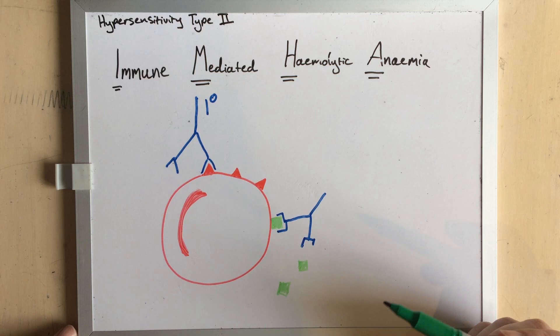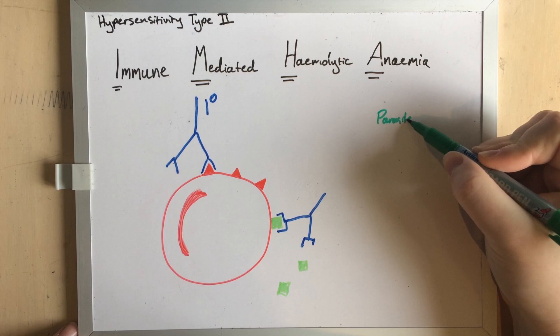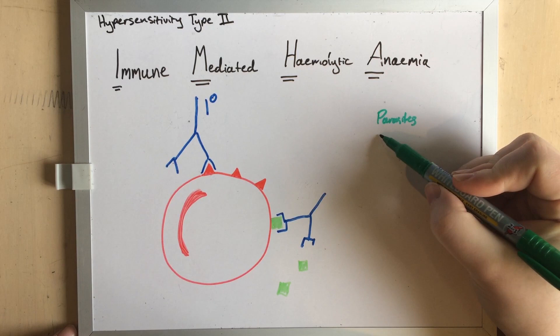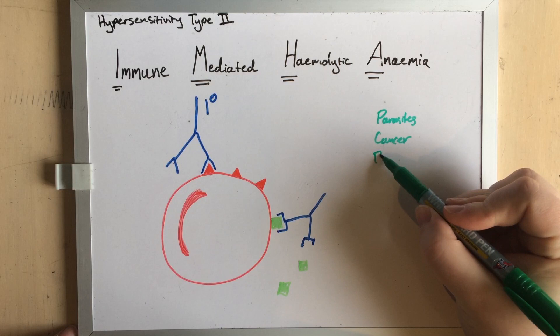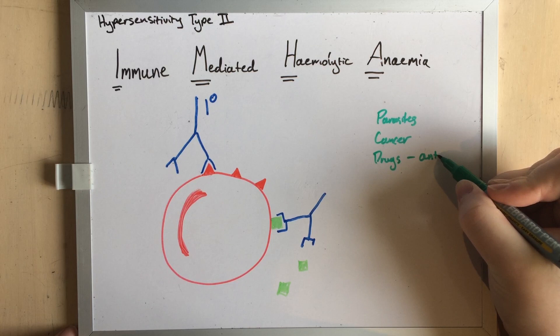These other antigens which are not naturally occurring on the surface of red blood cells might include blood-borne parasites like heartworm or lepto or haemobartinella, cancer including lymphoma and hemangiosarcoma, which is a tumor of blood vessel walls.